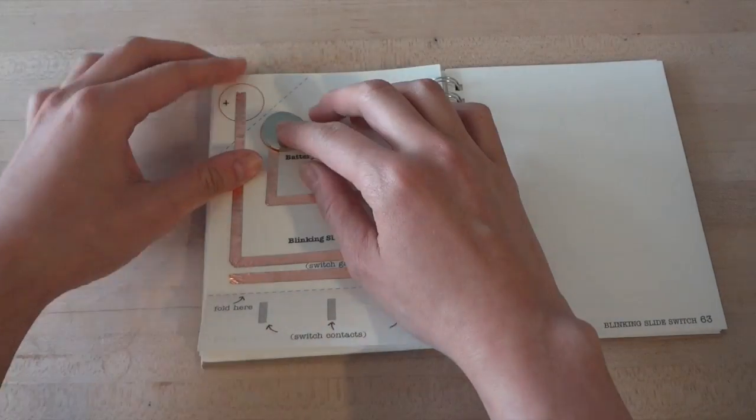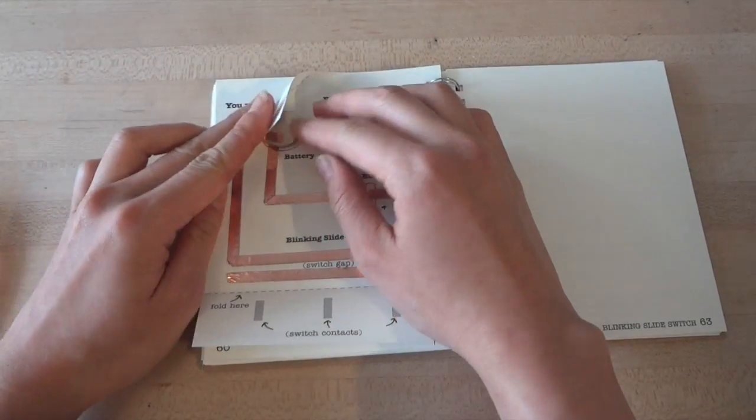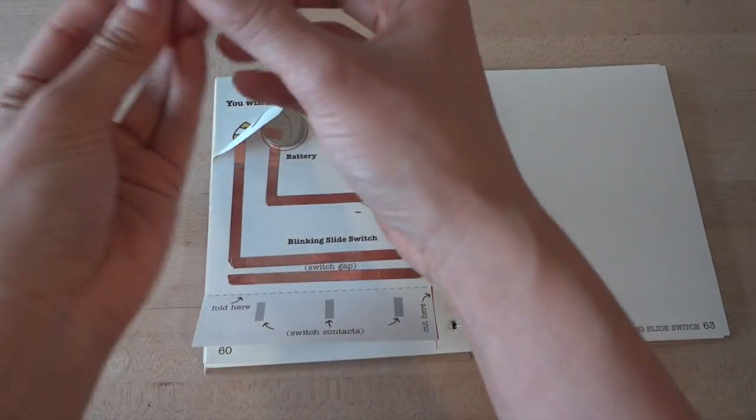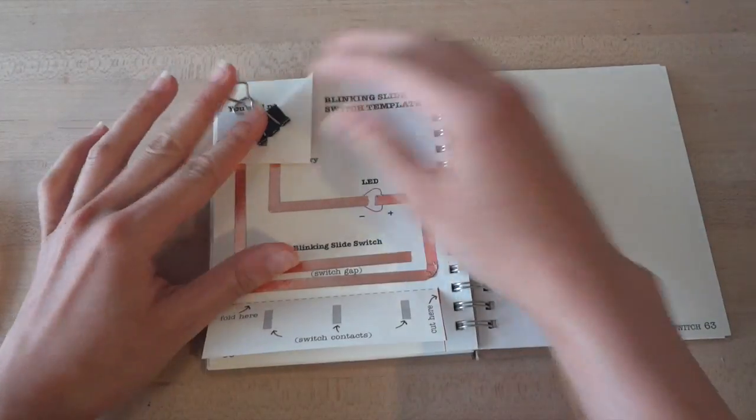Now create a battery holder by folding down the top left corner of your page along the dotted line. Then clip your battery in with the plus side up.